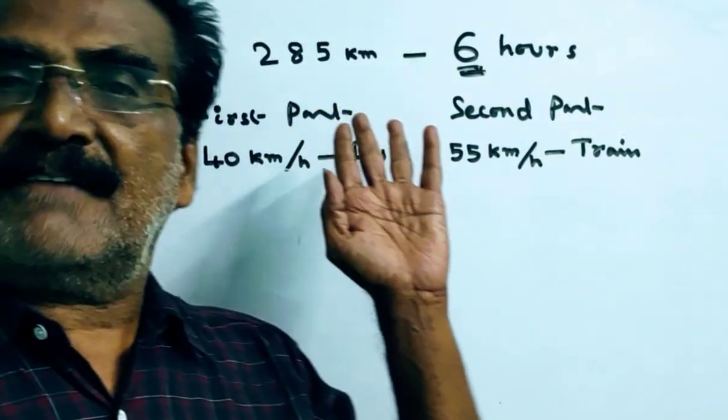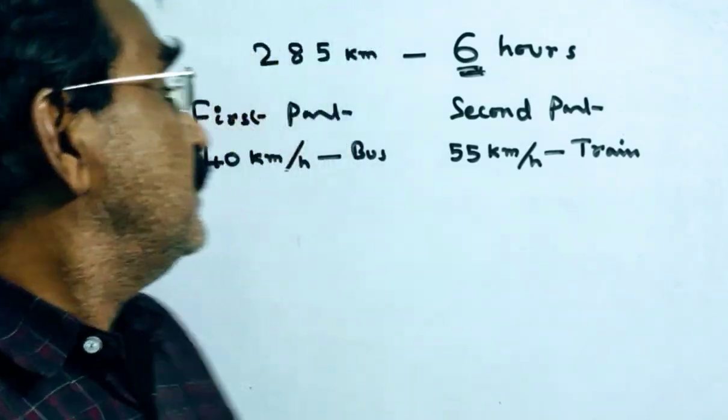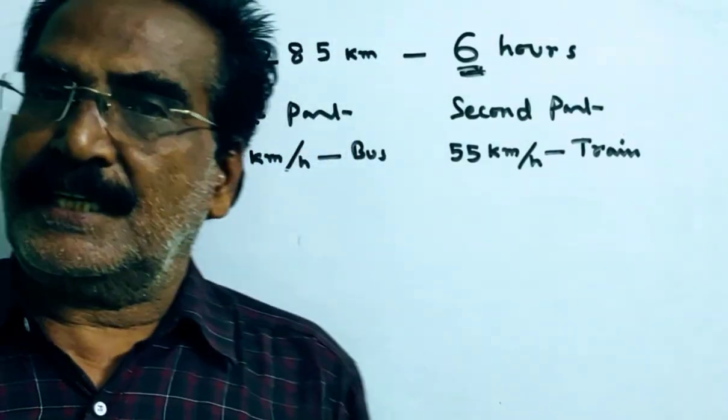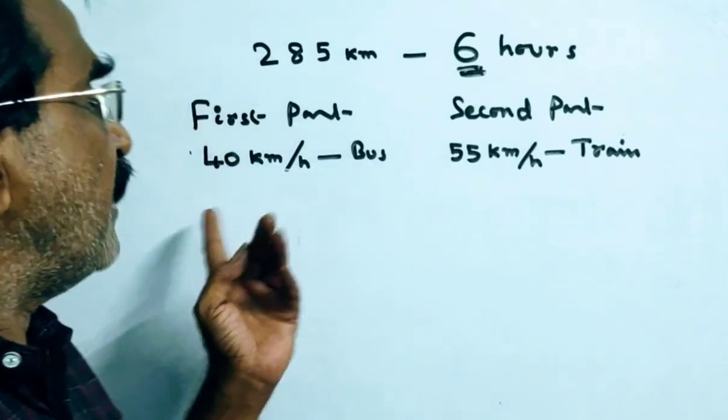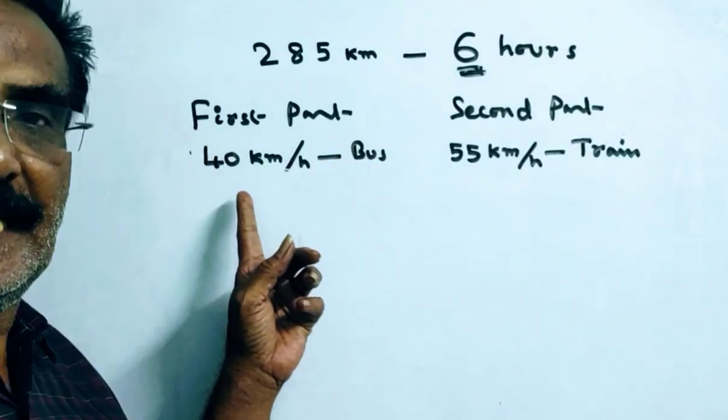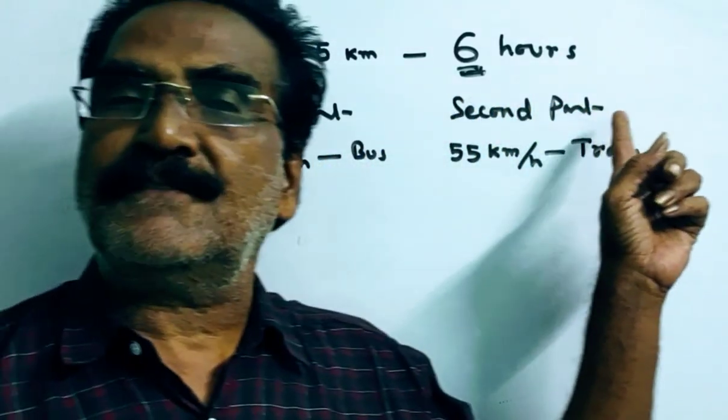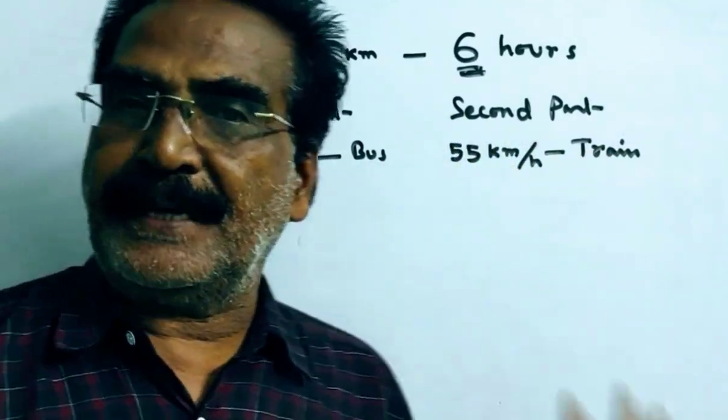A person travels 285 kilometers in 6 hours. In the first part of the journey, he traveled by bus at 40 km/h speed. And in the second part of the journey, he traveled by train at 55 km/h.